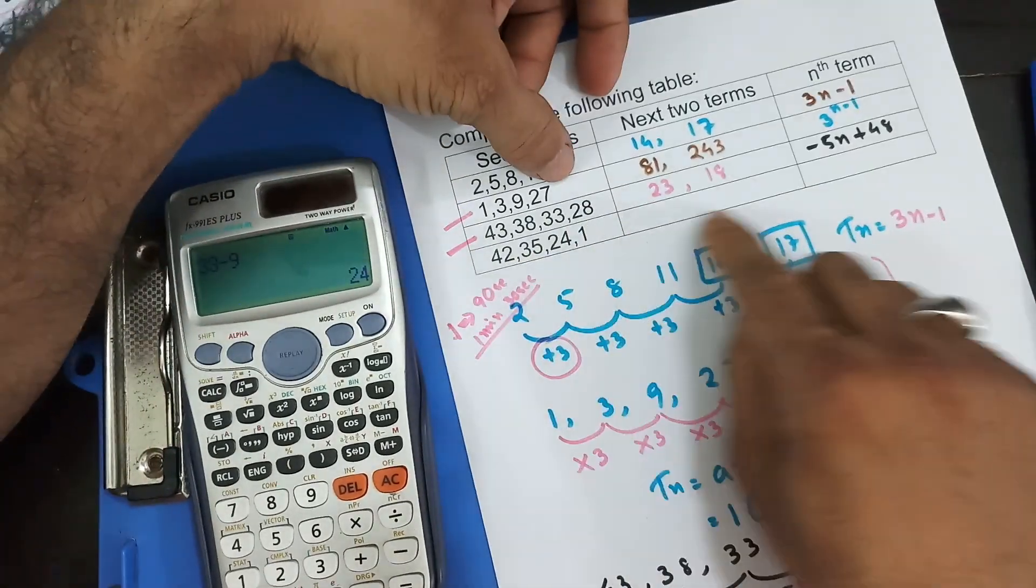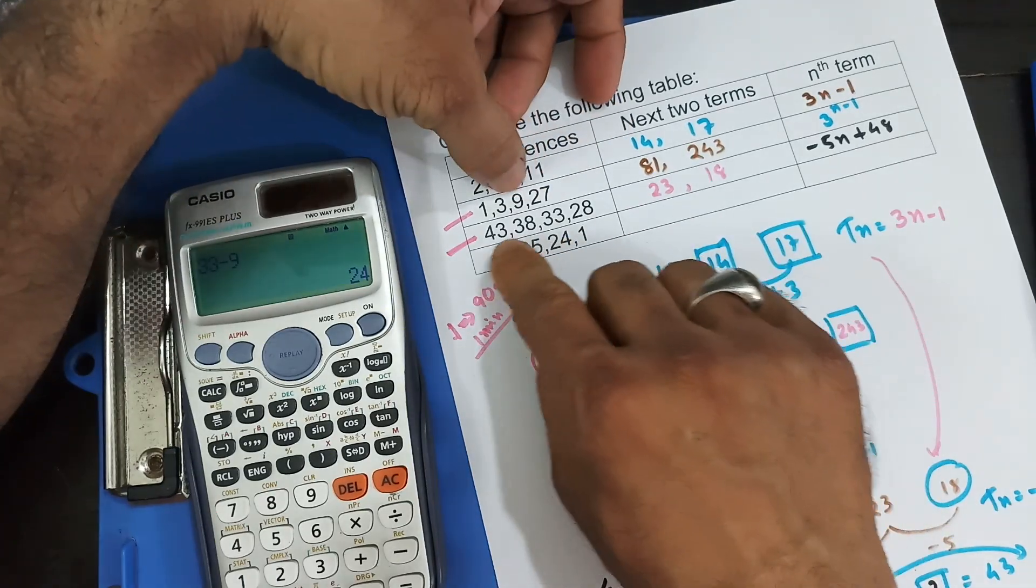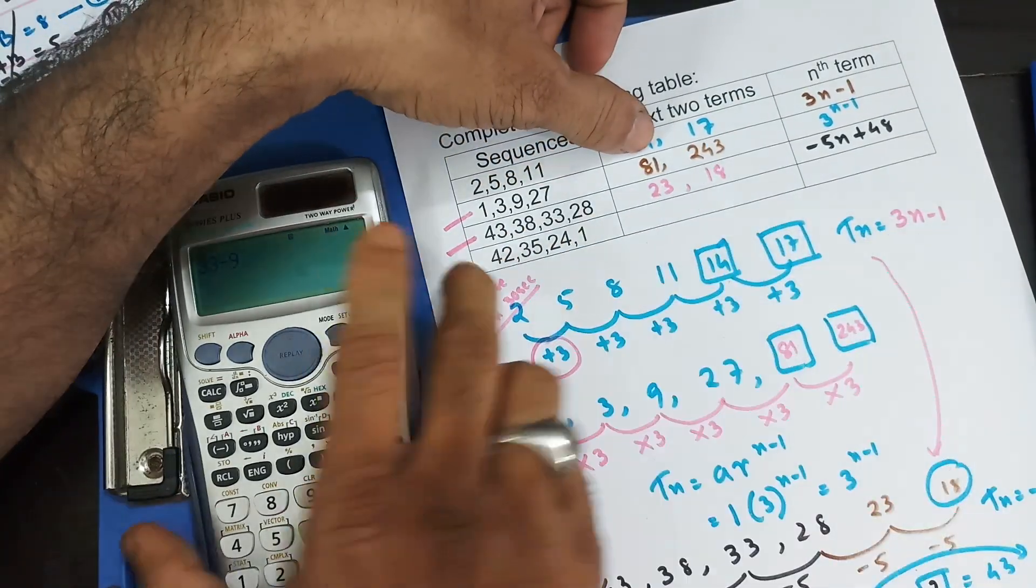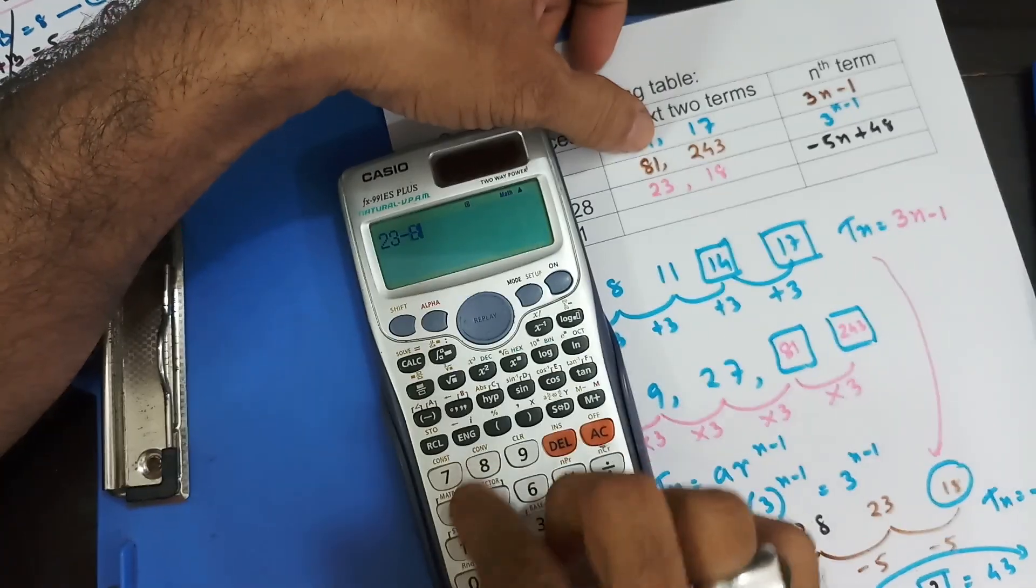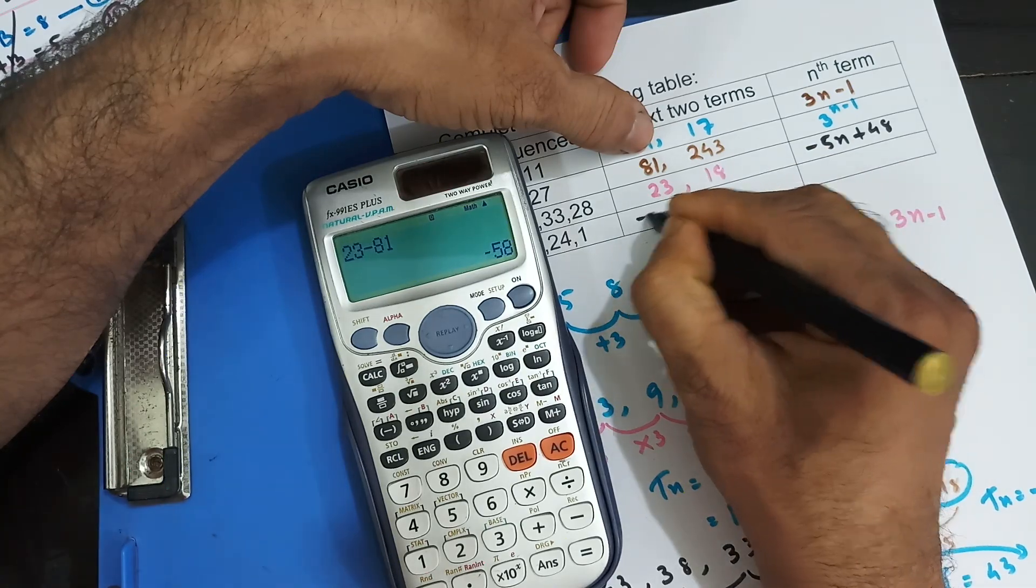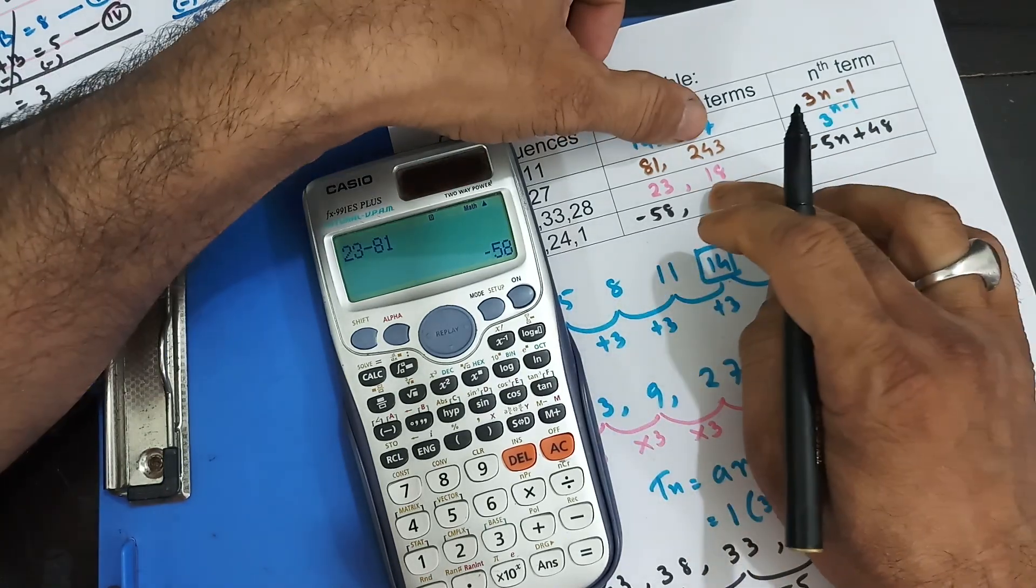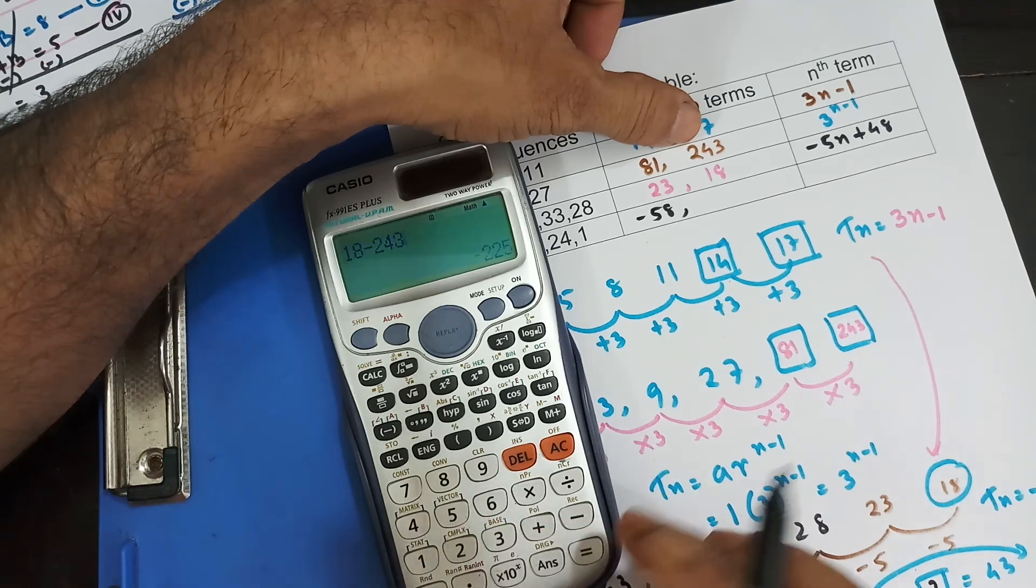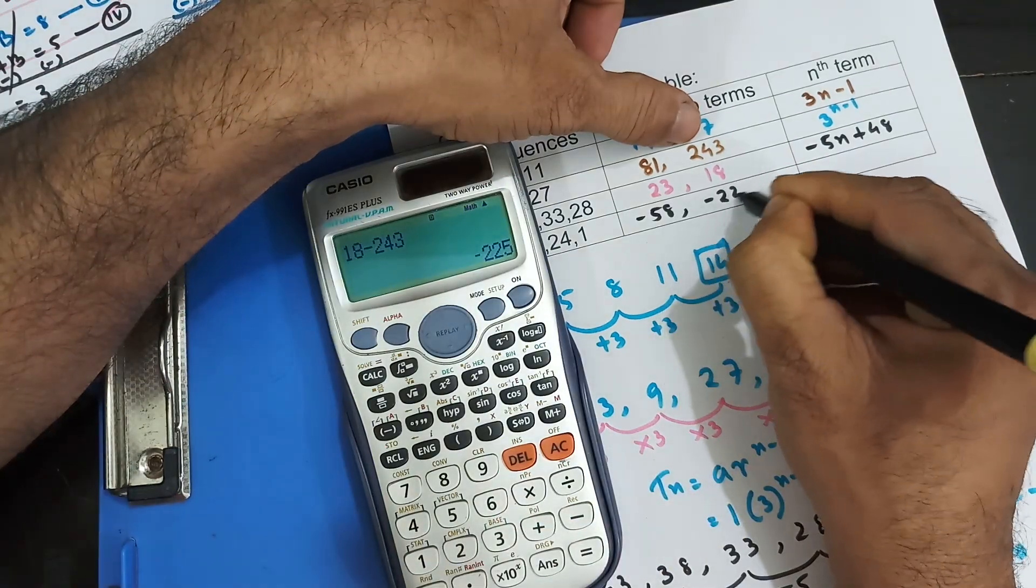Now, you don't need to do anything. Just see that this minus that gives you this. So, this minus that will give you this. So, 23 minus 81, that's going to be minus 58. And 18 minus 243, that's going to give you minus 225.